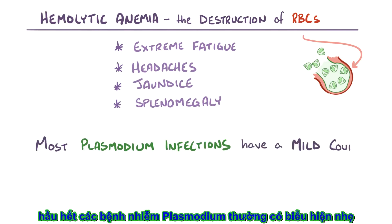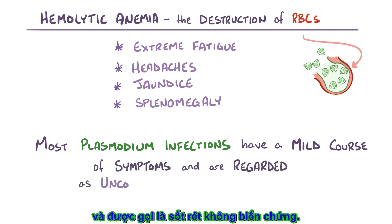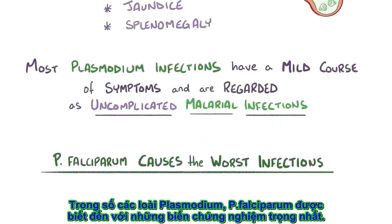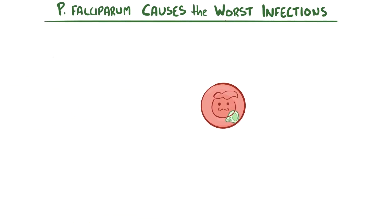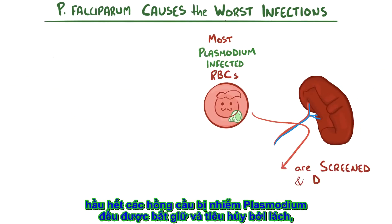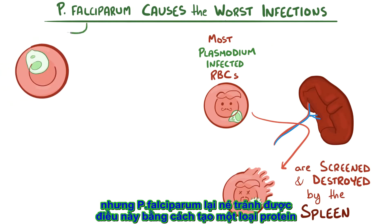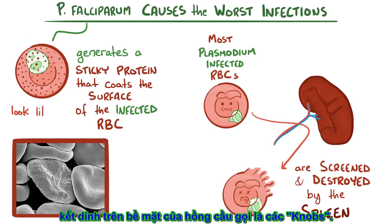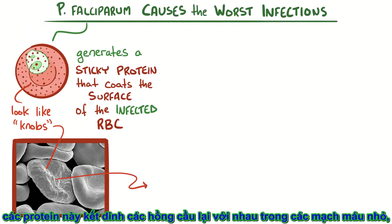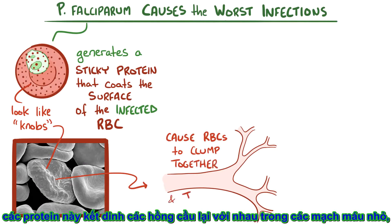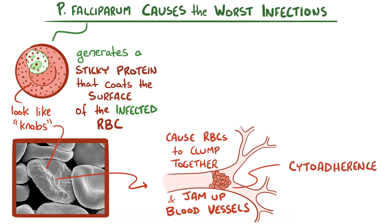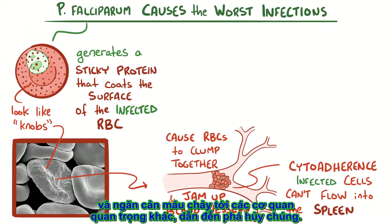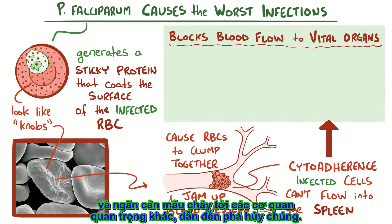Most Plasmodium infections have a mild course of symptoms and are generally regarded as uncomplicated malarial infections. Out of all the Plasmodium species, though, Plasmodium falciparum is known for causing the worst infections. Most Plasmodium-infected red blood cells get screened and destroyed by the spleen. Plasmodium falciparum, however, avoids this fate by generating a sticky protein that coats the surface of the infected red blood cells, and these look like knobs or little bumps. This protein causes the red blood cells to clump together and jam up tiny blood vessels, a process known as cytoadherence, which blocks blood flow from reaching other vital organs.